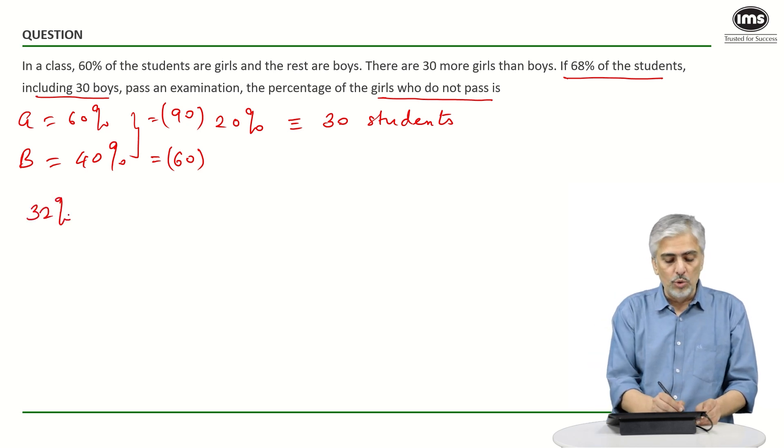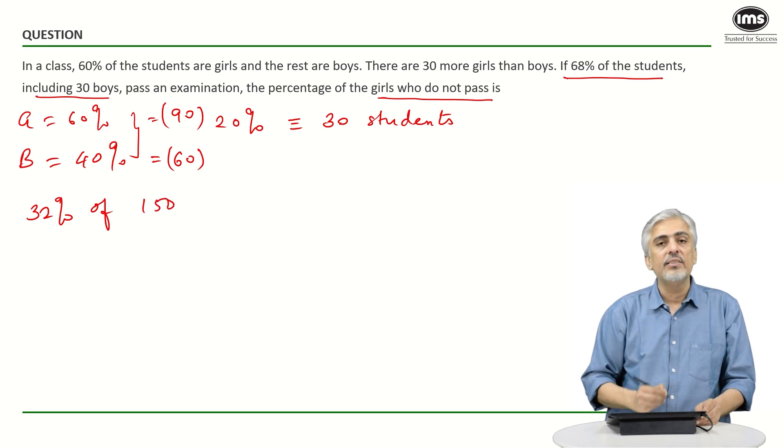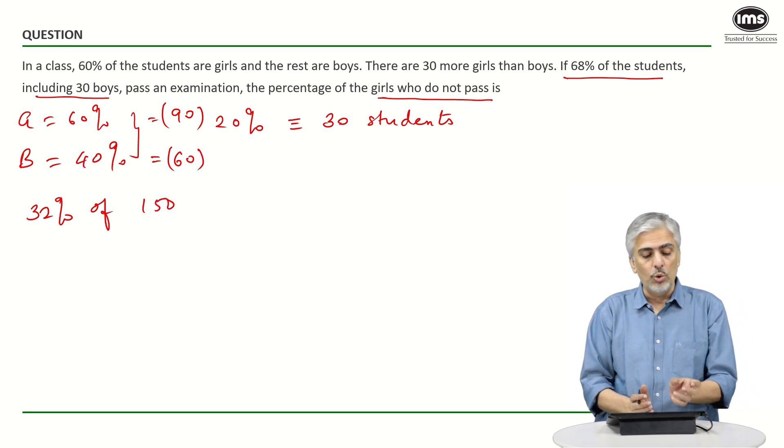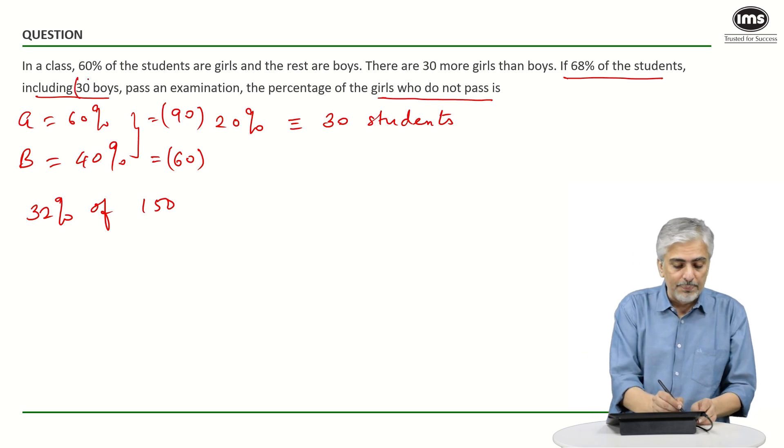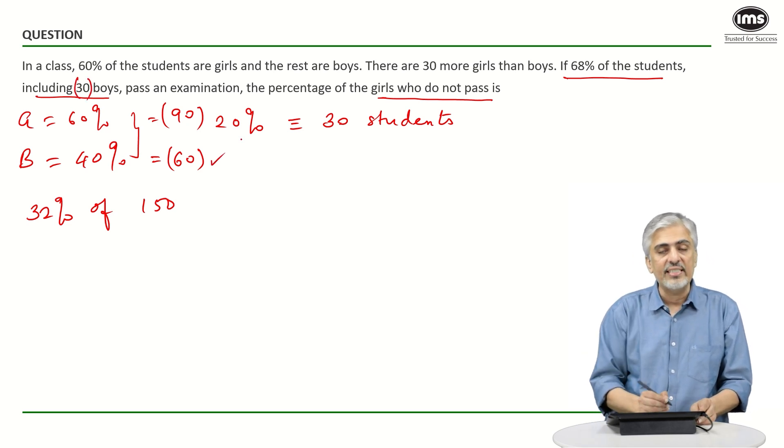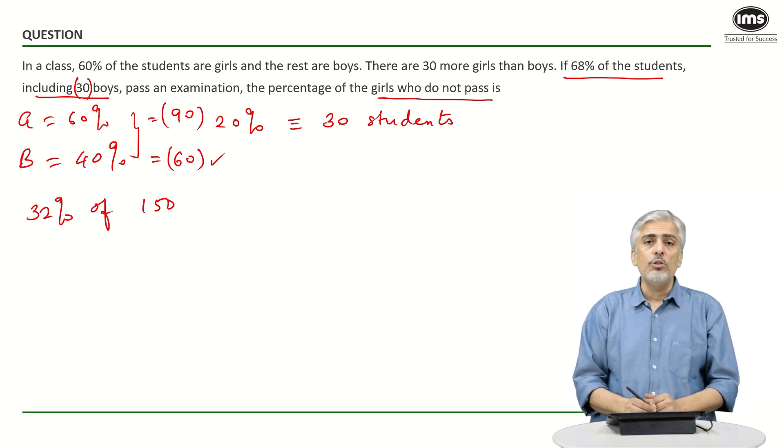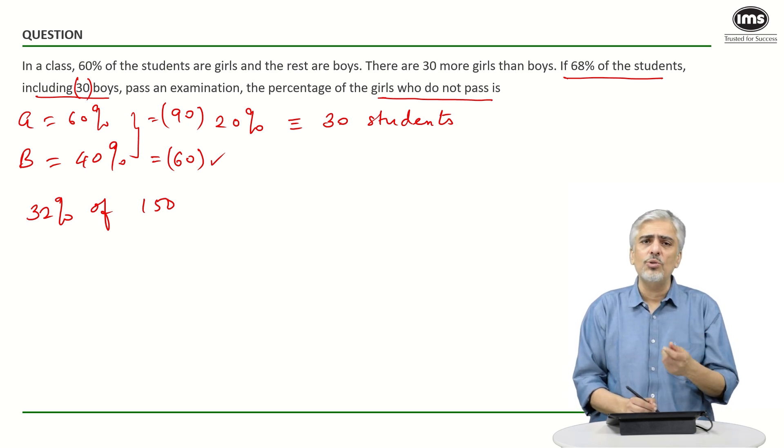So 32% of 150 students have failed the examination. 30 boys had passed, but the total number of boys is 60, so 30 boys failed also. What is 32% of 150? How can you do this calculation faster?